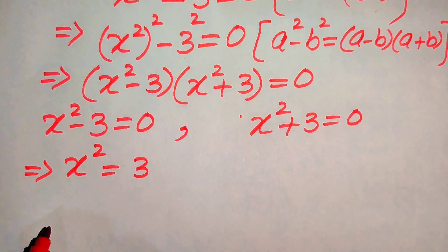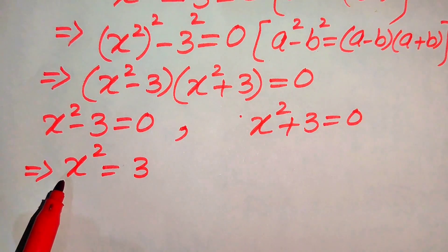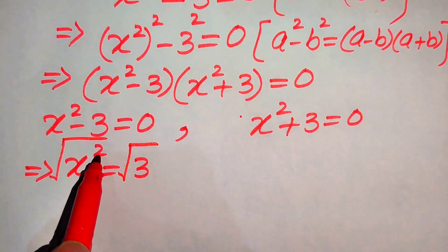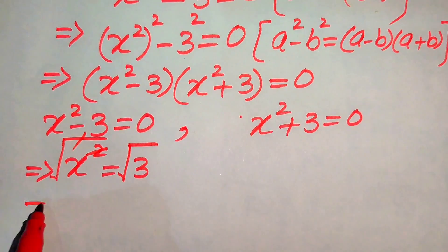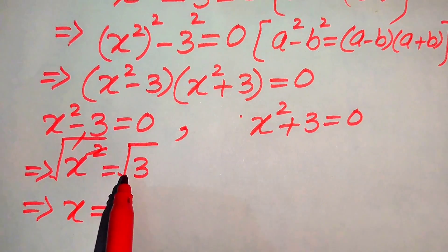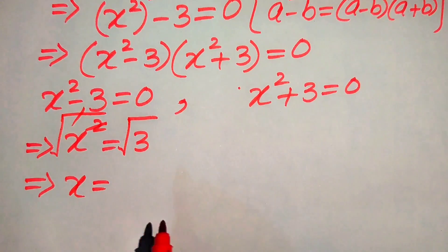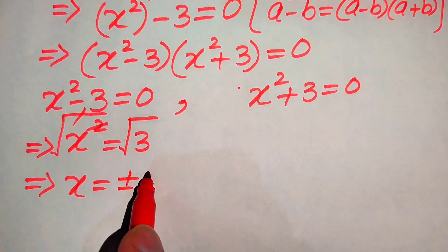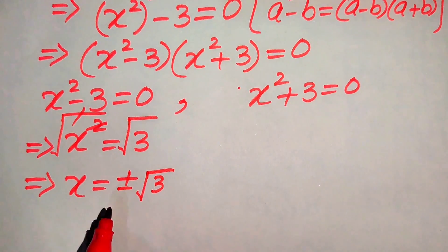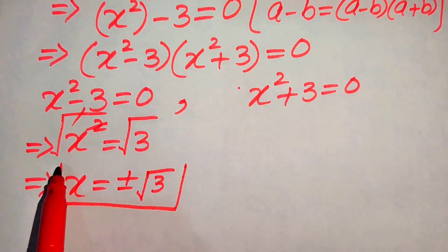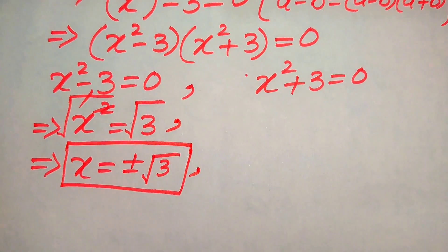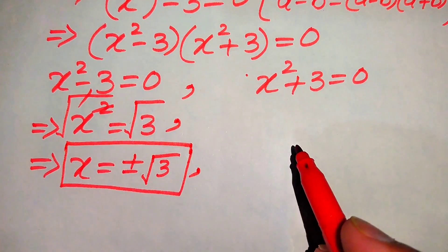In order to find the value of x, we take the square root on both sides. When we take the square root, the square and square root cancel, and we get x equals to plus or minus square root of 3. These are the two real solutions of the given equation. Since our equation is fourth order, we still need to find all four roots.